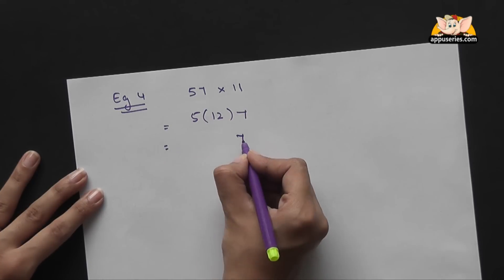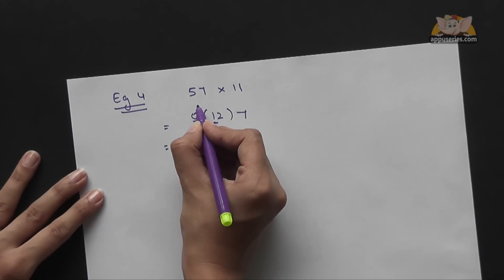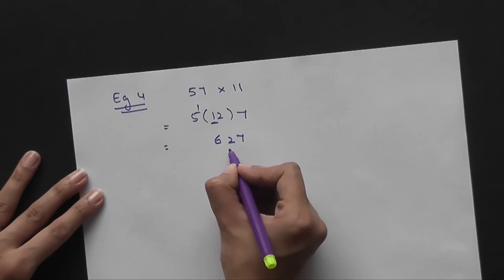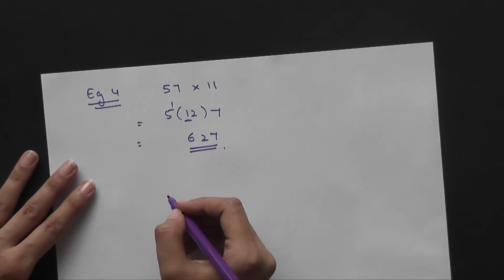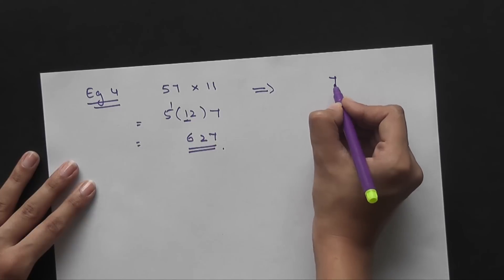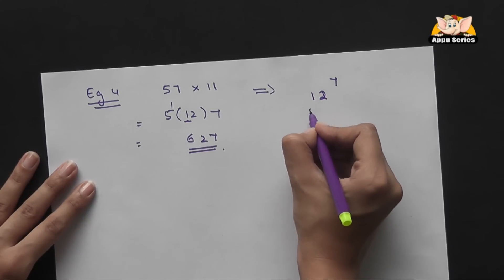So we write 7, then 2, and this 1 gets carried over so it becomes 6. So your answer is 627. It's nothing but like writing it this way: you write 7, then 7 plus 5 is 12, and then 5.